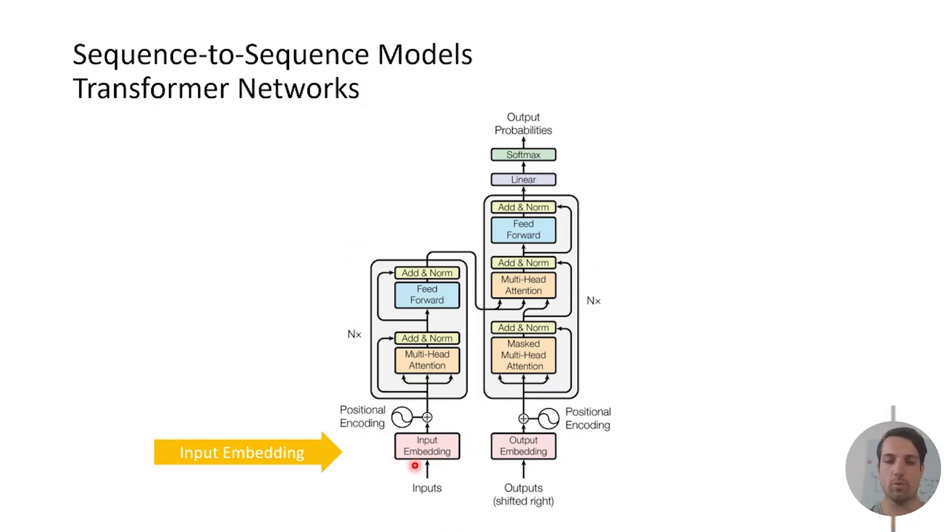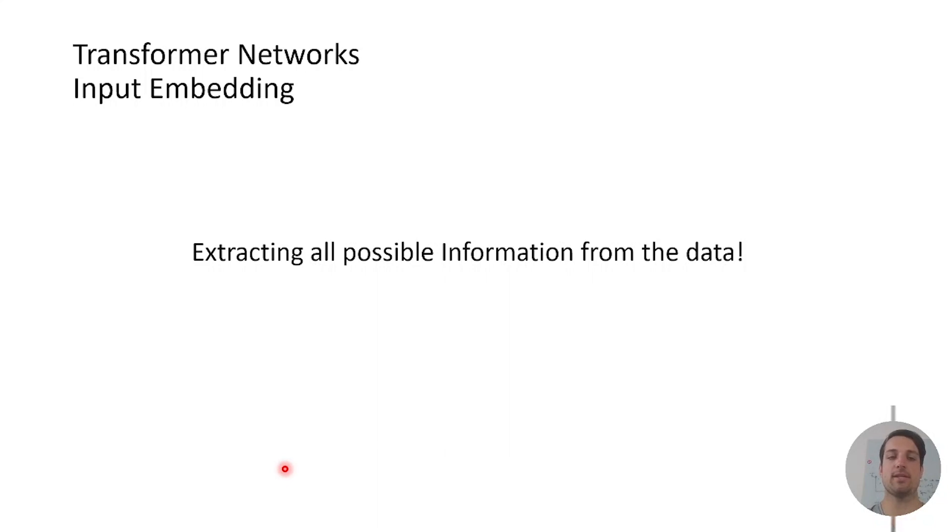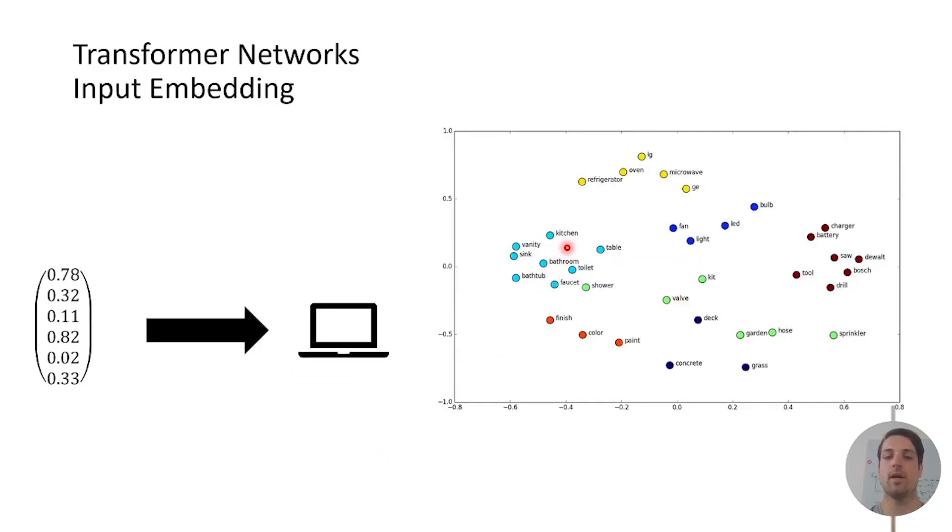Right at the beginning we put in the input sequence and process it through the input embedding. The aim of the input embedding is to extract all possible information from the data. For example if we talk about an NLP task we can't put the sentence itself into the algorithm. We need to transform it or embed it to provide numerical values. This is done by an embedding algorithm.